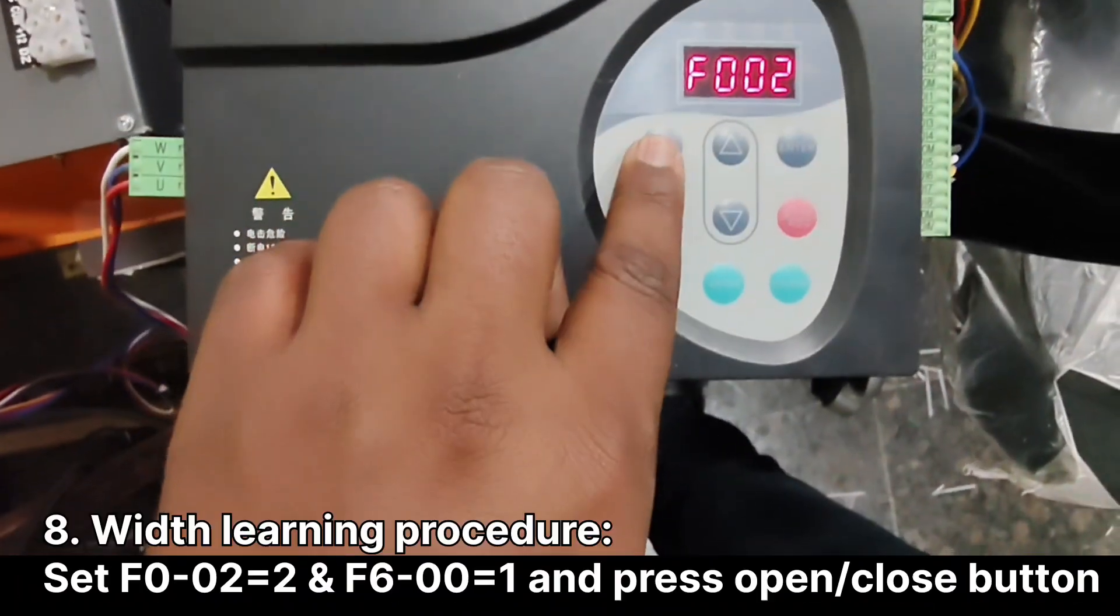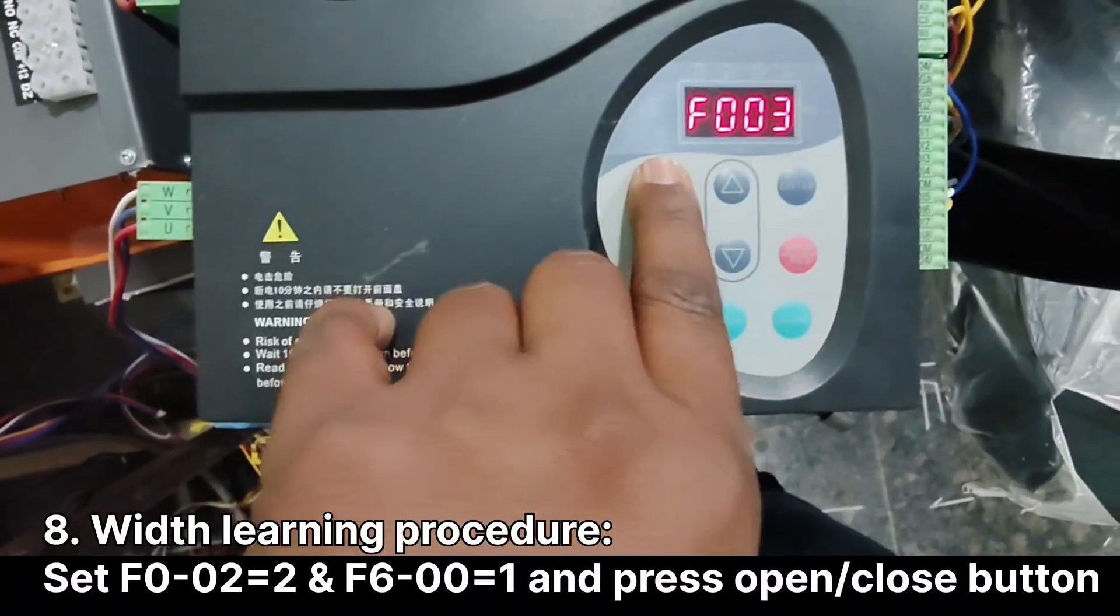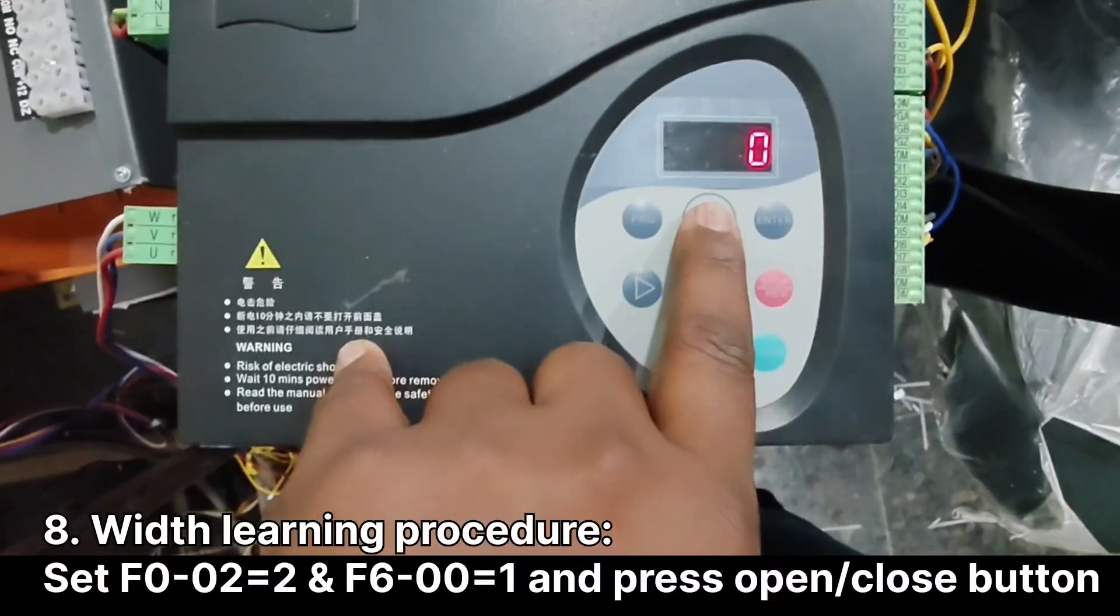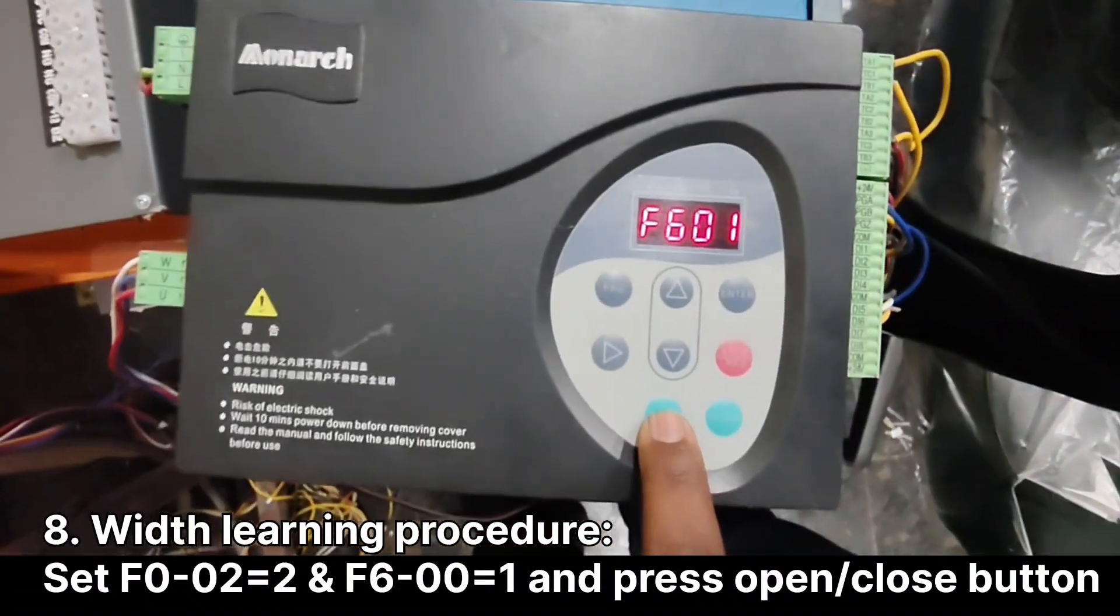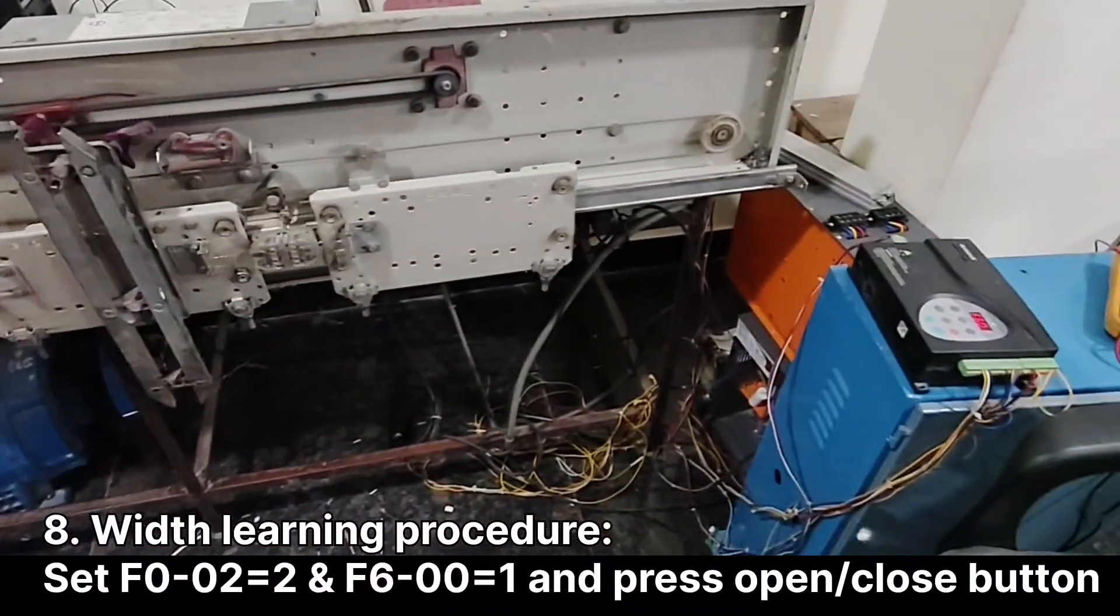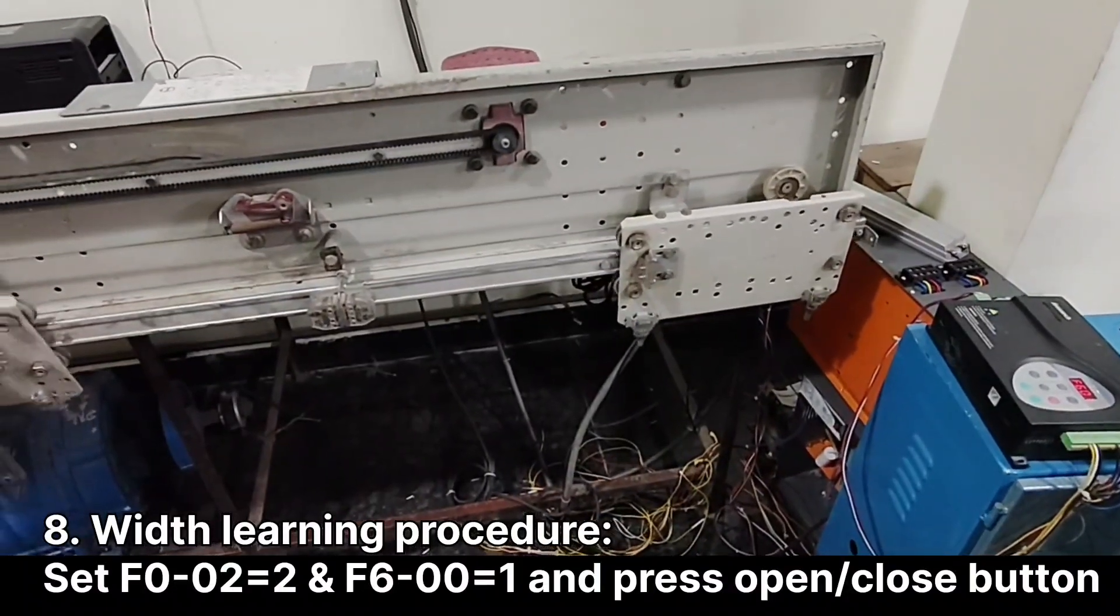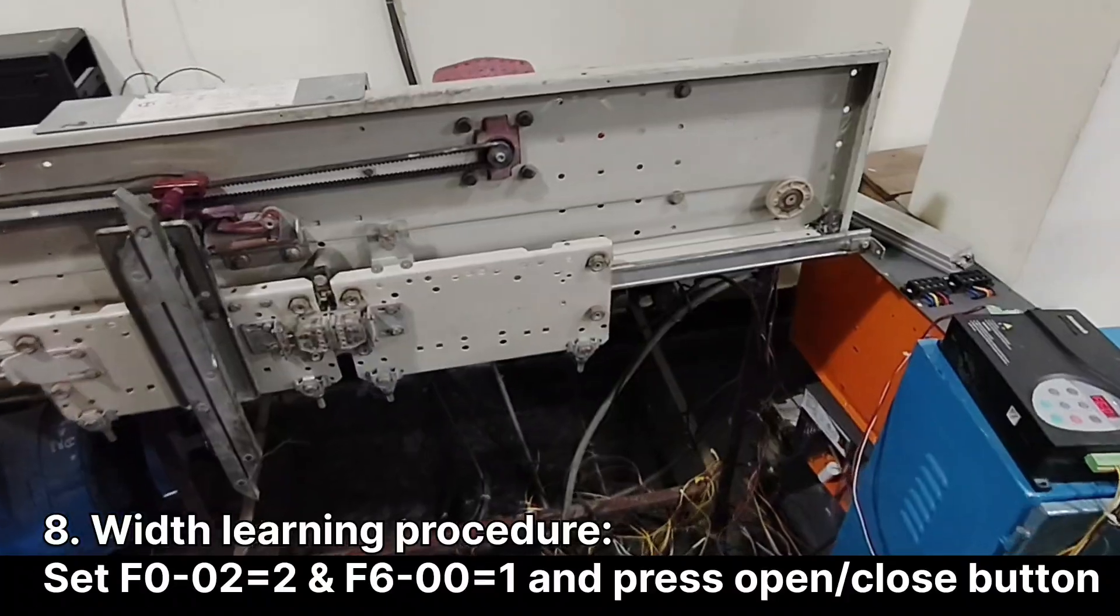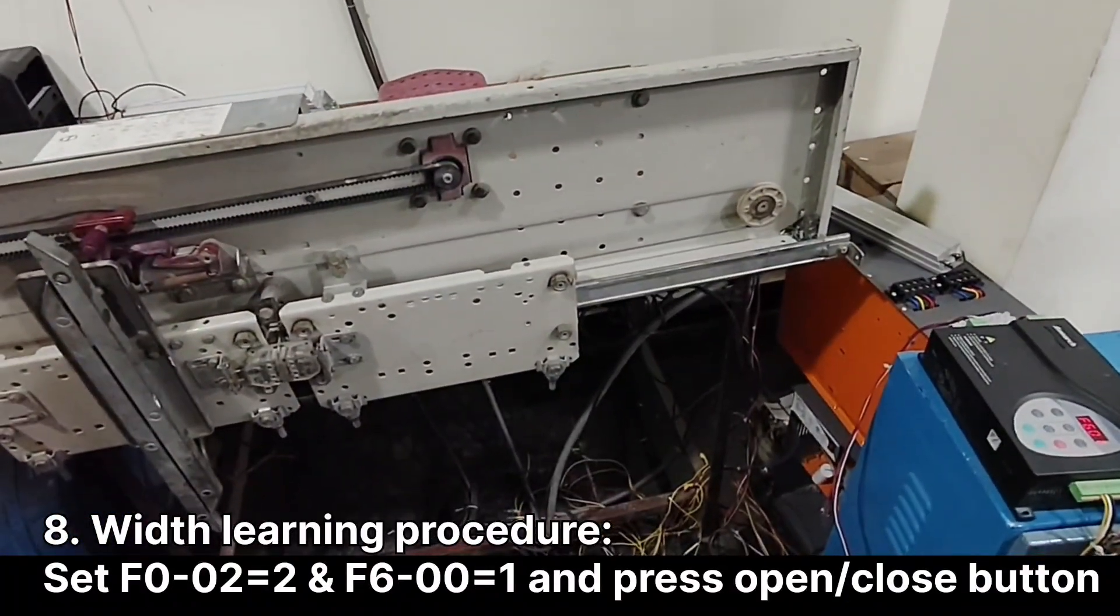For width learning, set F002 to 2 and F600 to 1. Give enter, then press open or close button. Door will open and close 3 times. After width learning is completed, LED will turn off.